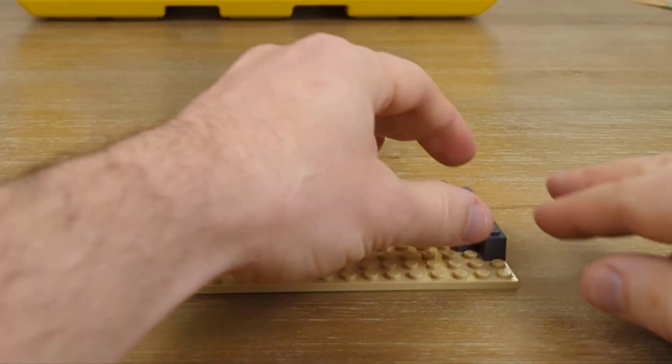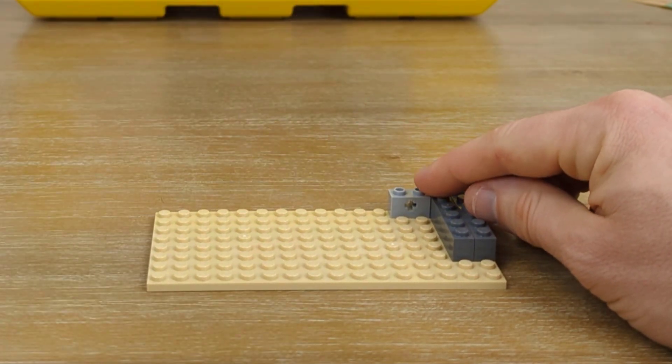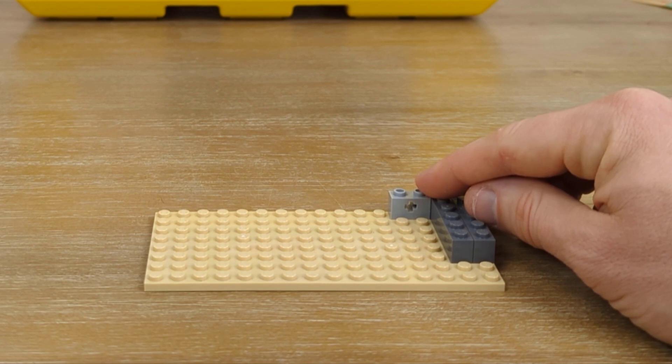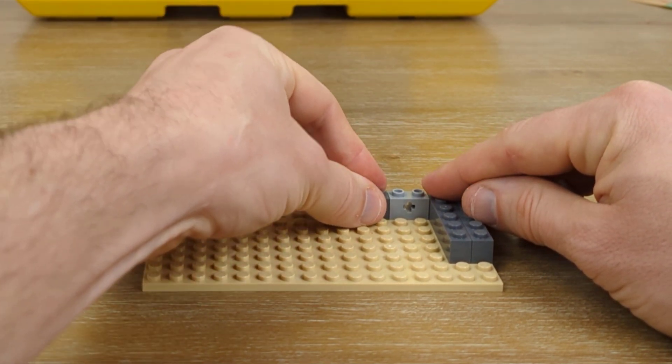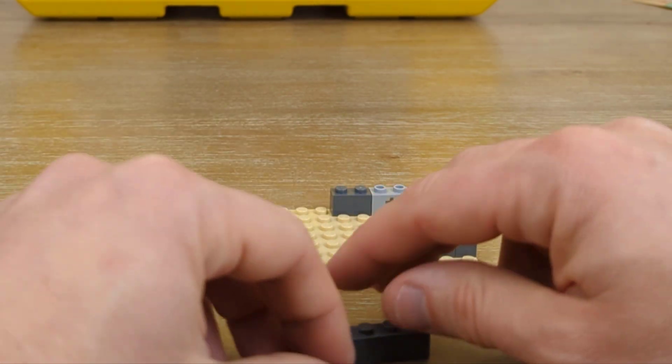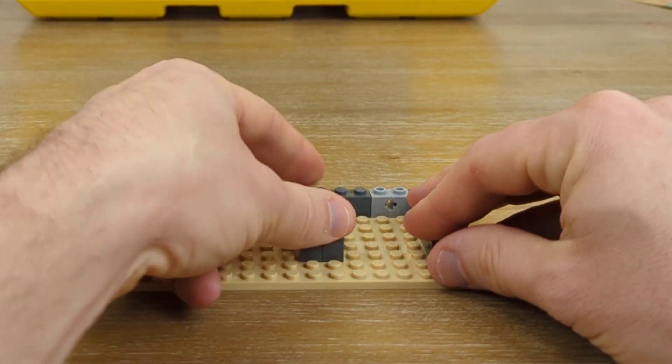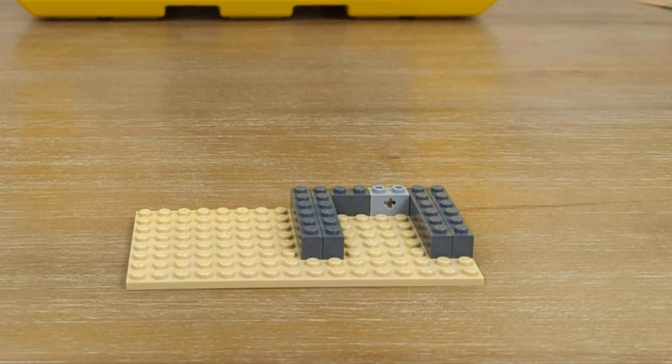And we're going to start off by putting together our base, and so we'll put a couple gray beams down on the bottom. And as we build this, we want to make just a solid base for our windmill to stand. So we use a lot of gray beams for this. They go right across, and a little bit of a struggle to put them down on this plate, but it's working out just fine.